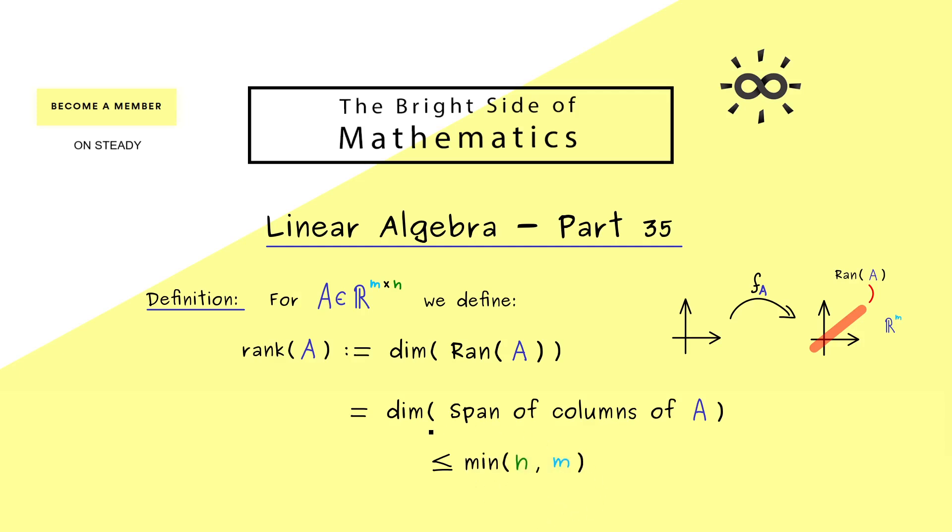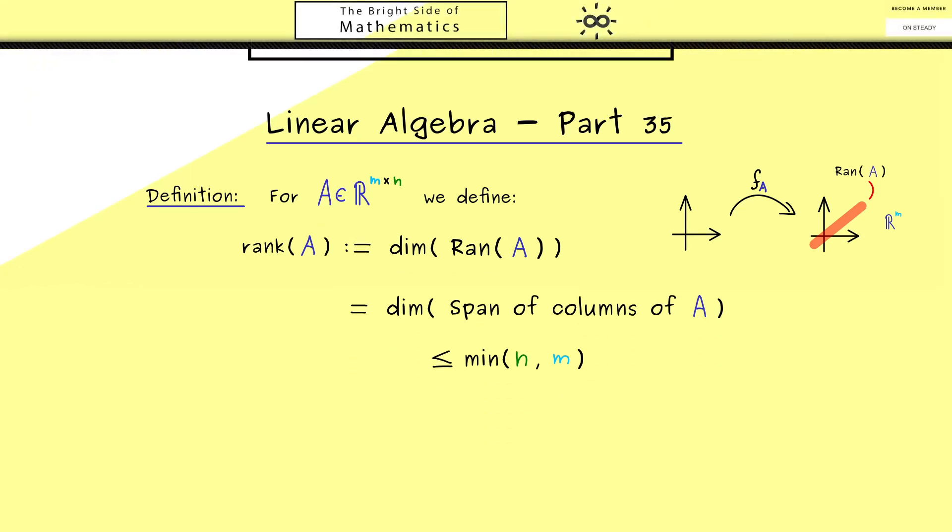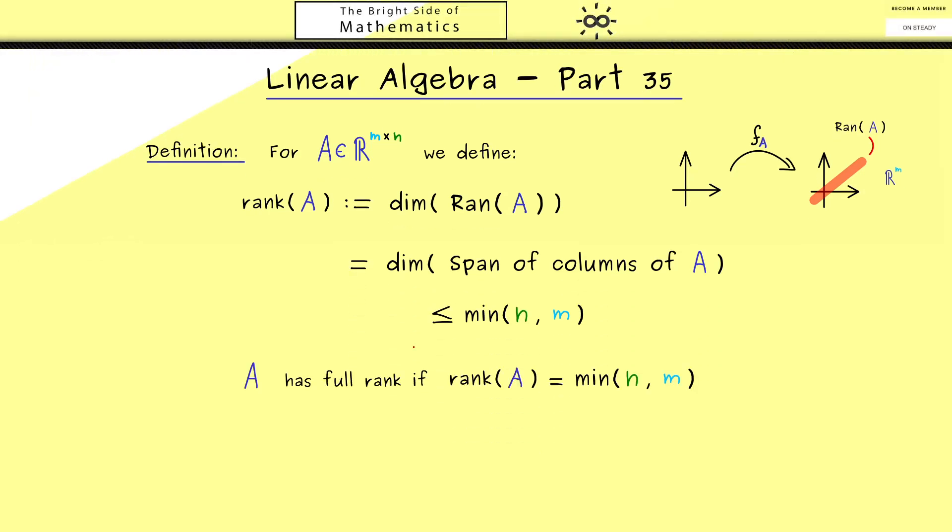Moreover, this explains now that we say a matrix A has full rank if the rank is exactly this minimum here. So in this case, it is either n or m, depending which number is smaller. So now you also know the term full rank. Indeed, this is a notion you often see while discussing ranks of matrices.